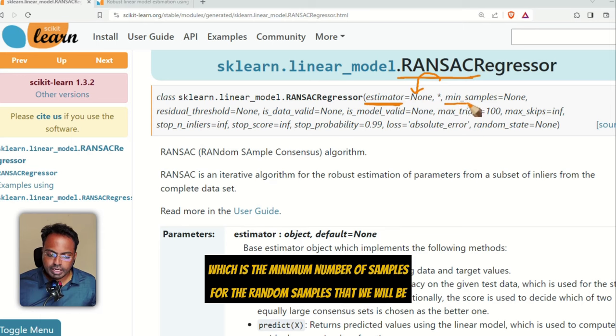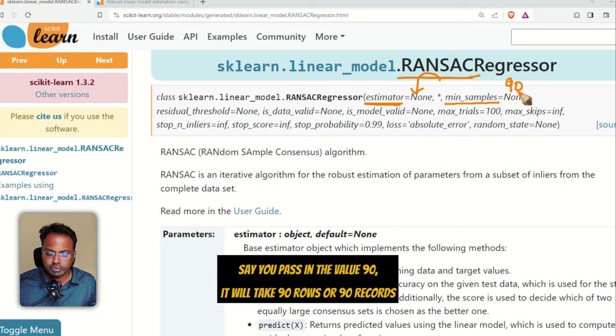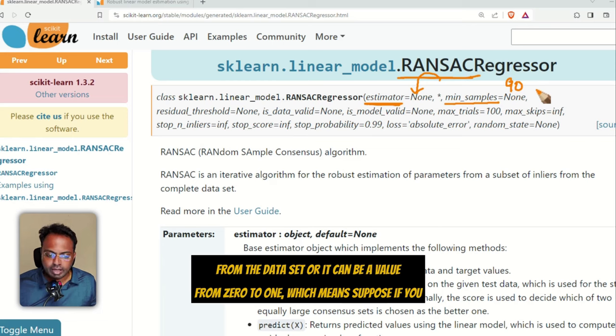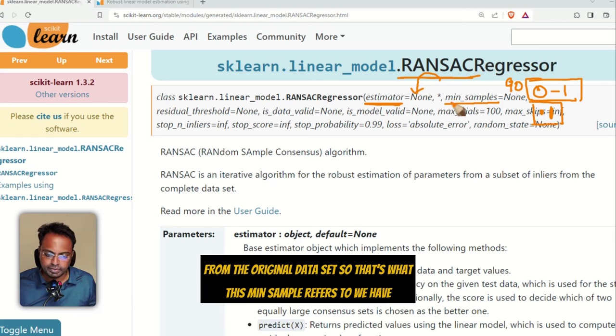This can be a number, which means if you pass in an integer number, say you pass in the value 90, it will take 90 rows or 90 records from the dataset. Or it can be a value from 0 to 1, which means suppose if you pass in the value 0.1, it will take 10 percentage sample from the original dataset. So that's what this min sample refers to.